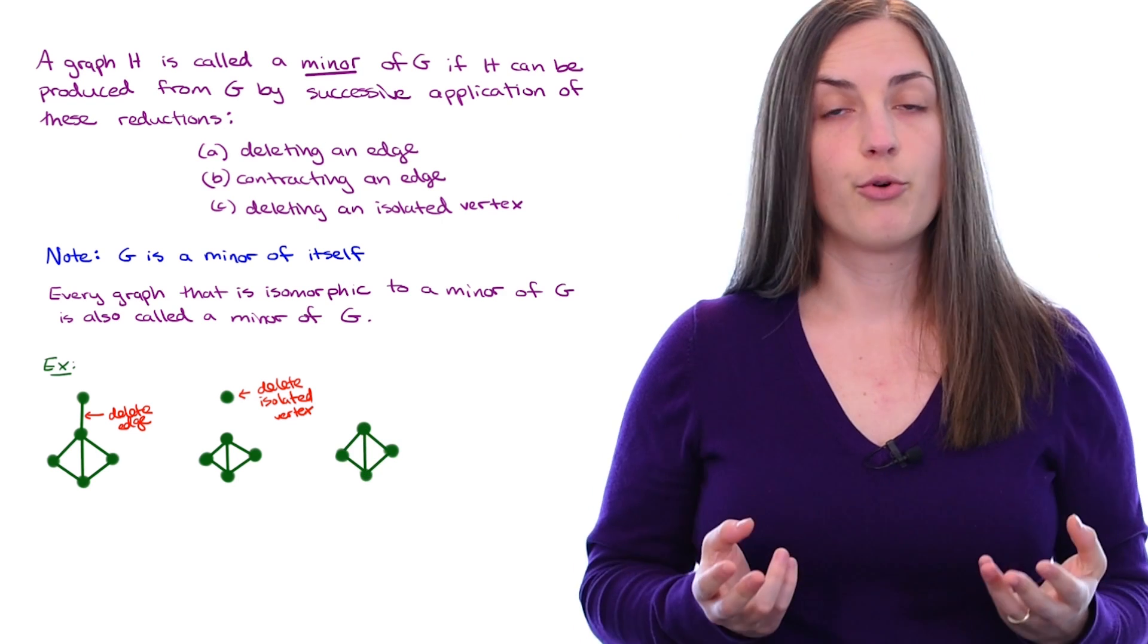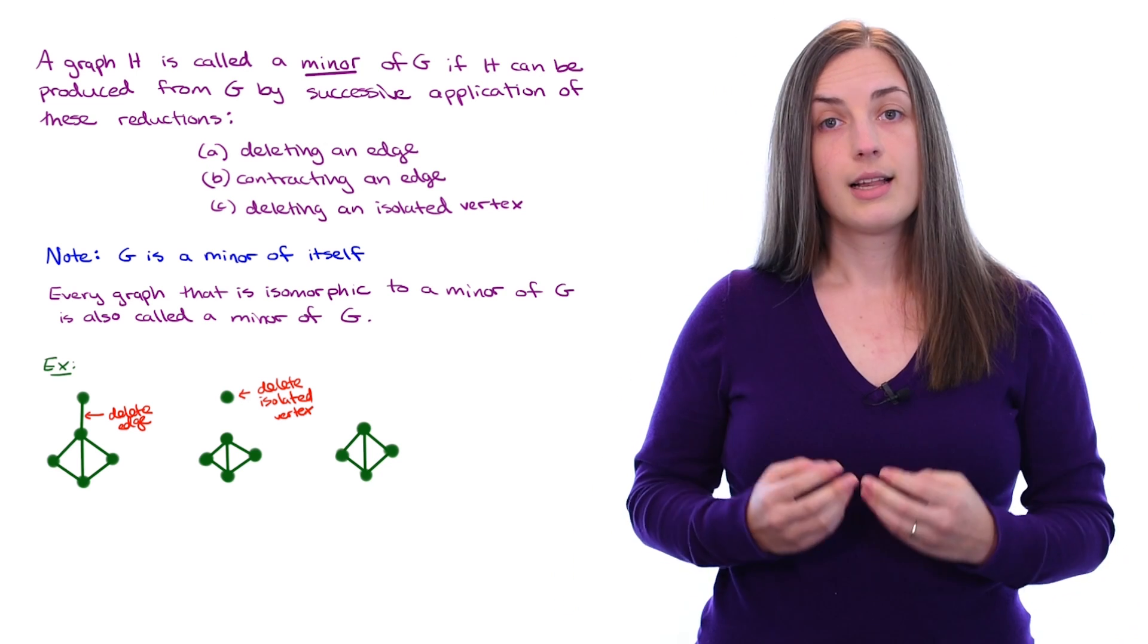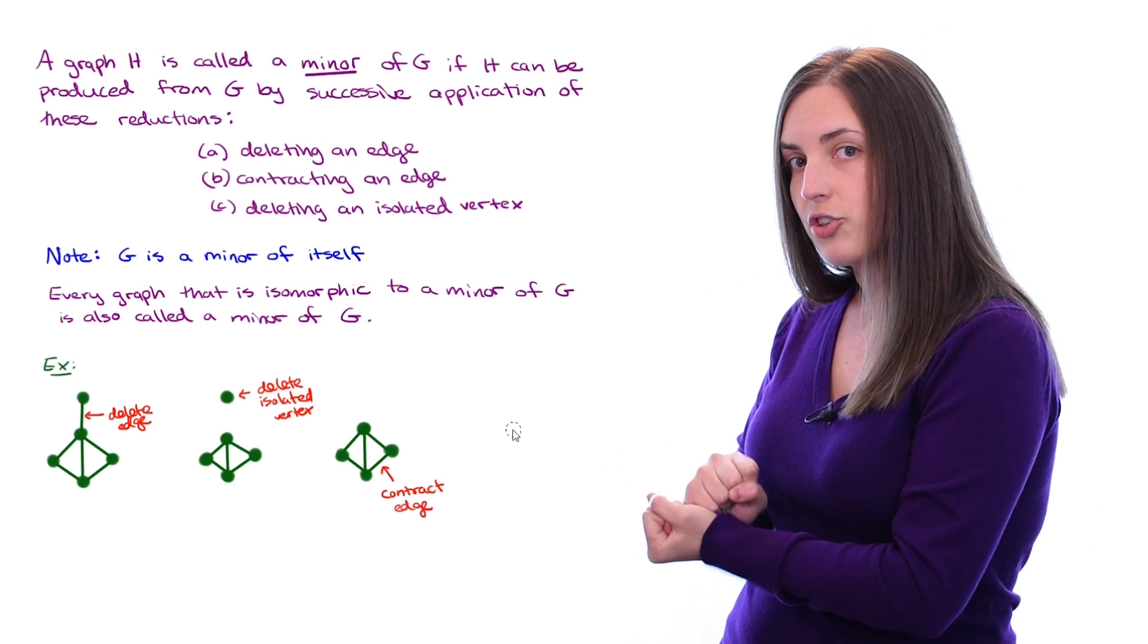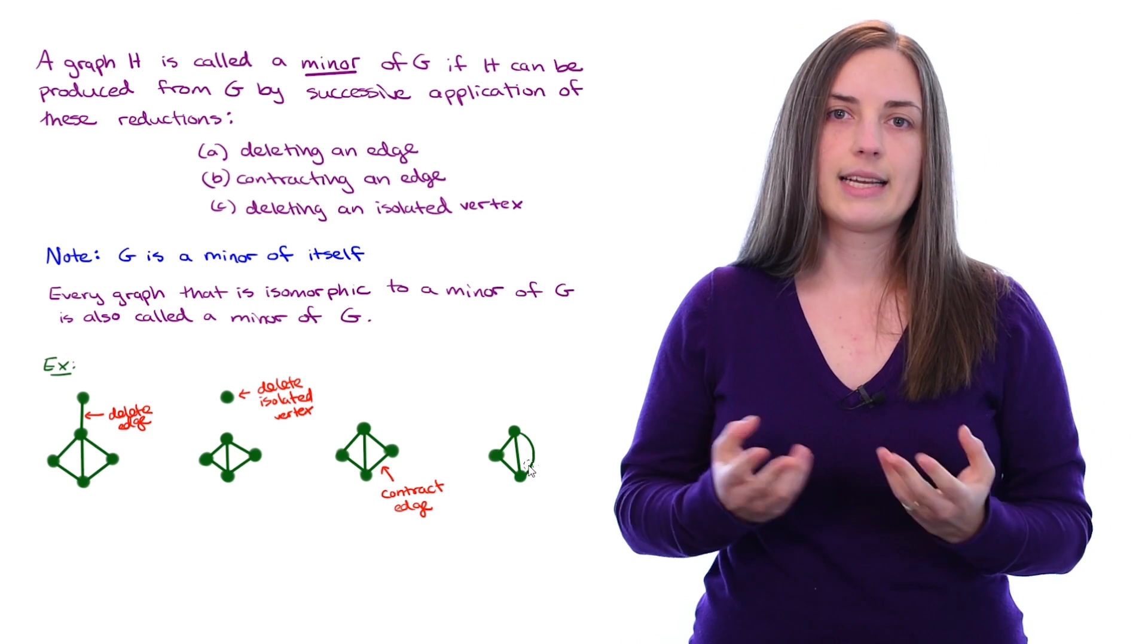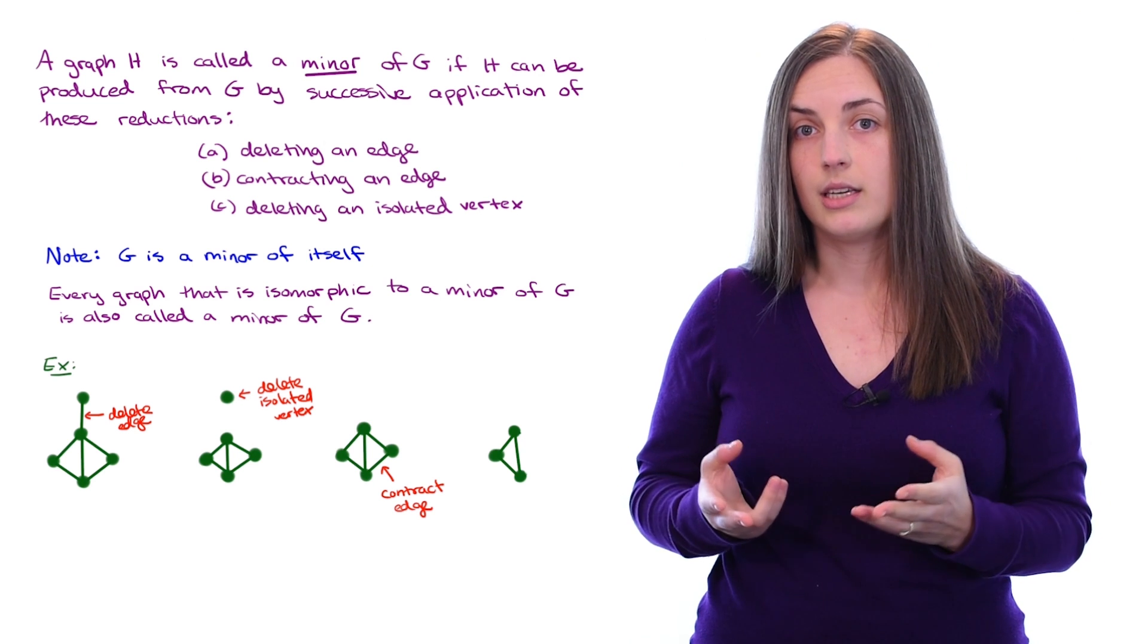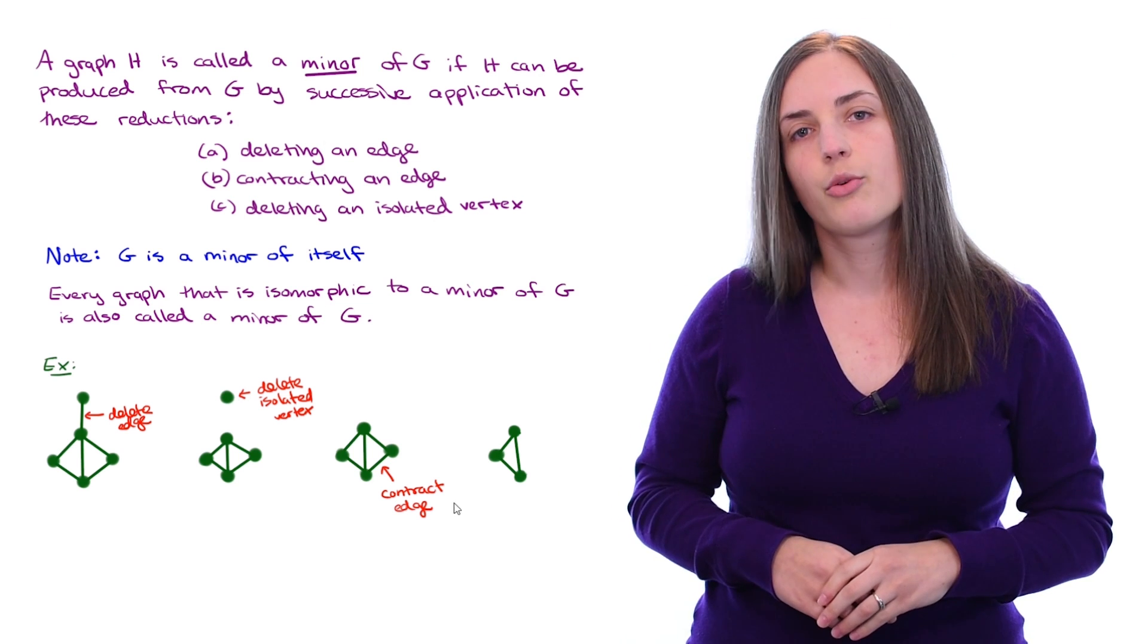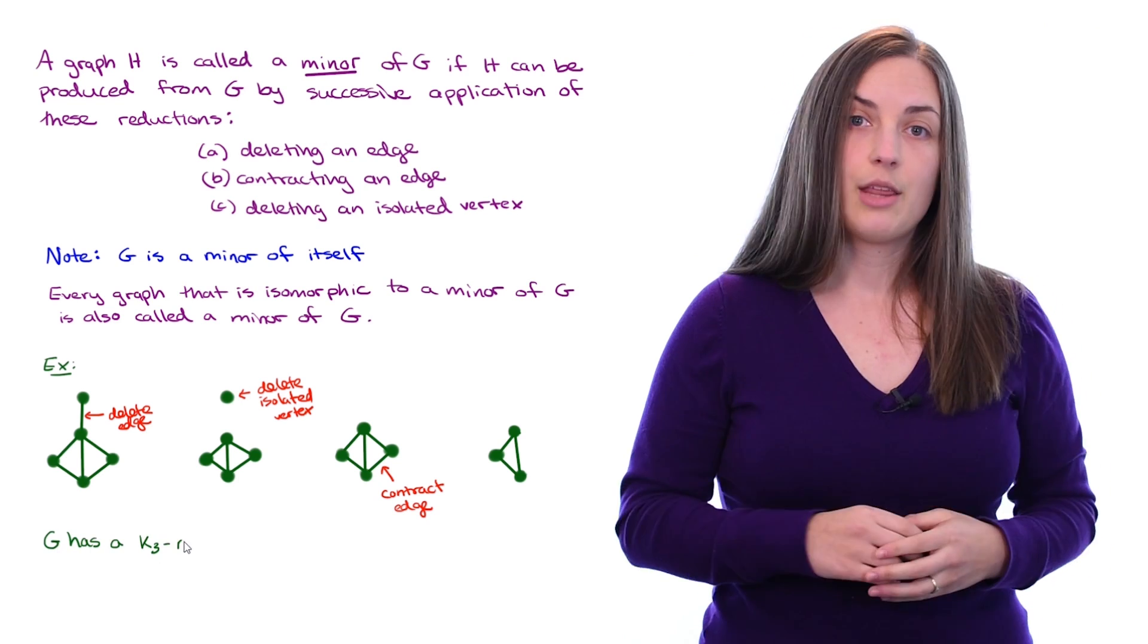Now maybe I'd like to perform an edge contraction. Let's say I perform an edge contraction on the edge on the bottom right. After I contract that edge, the new graph has a multiple edge, and I'd like to remove that so I'm only considering simple graphs. Now I see that the edge contraction obtained the graph which is isomorphic to K3, just a triangle. In other words, my original graph G has a K3 minor.